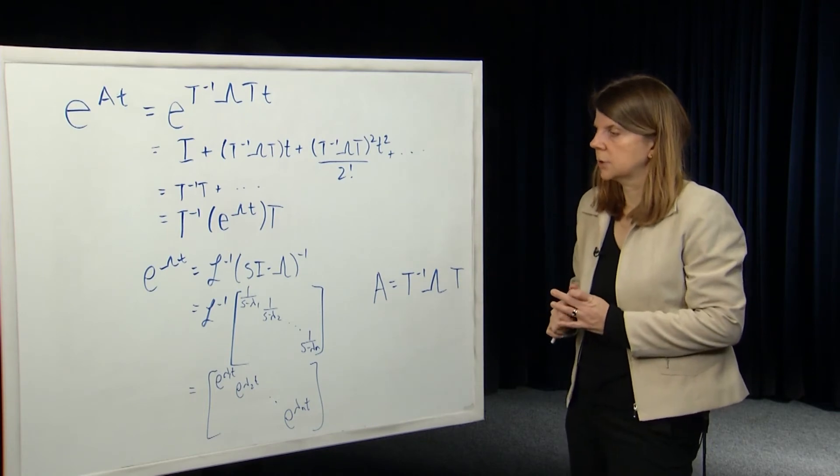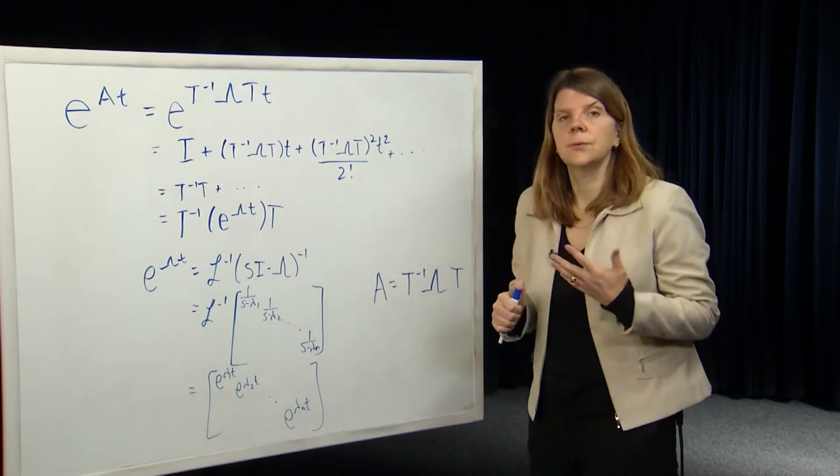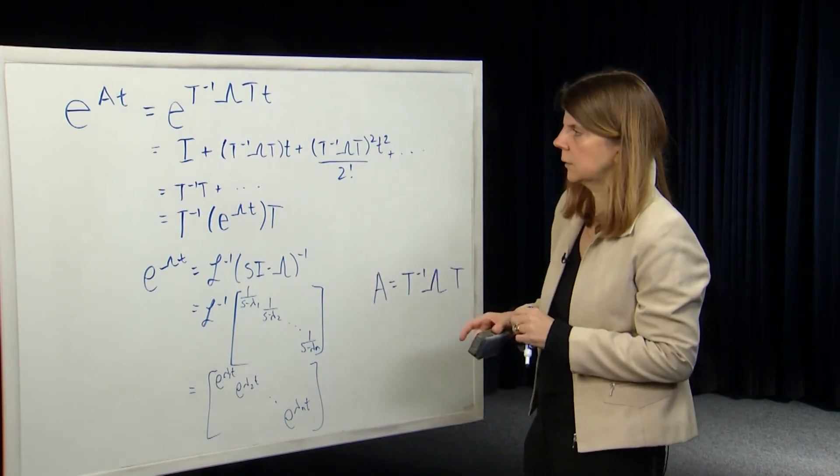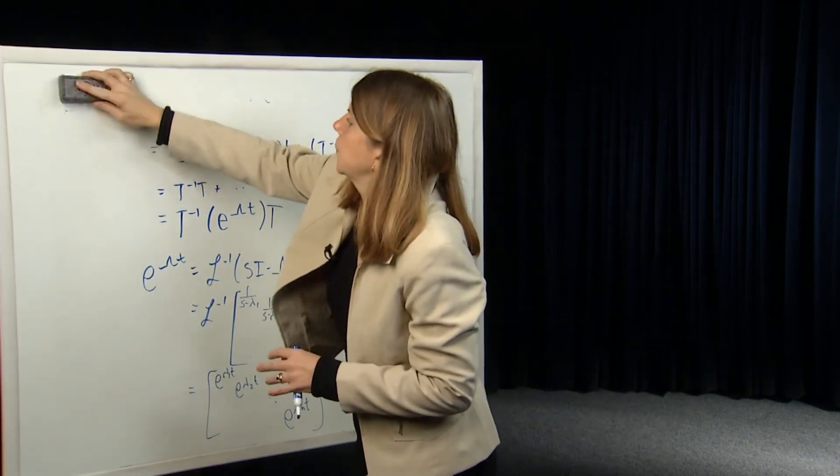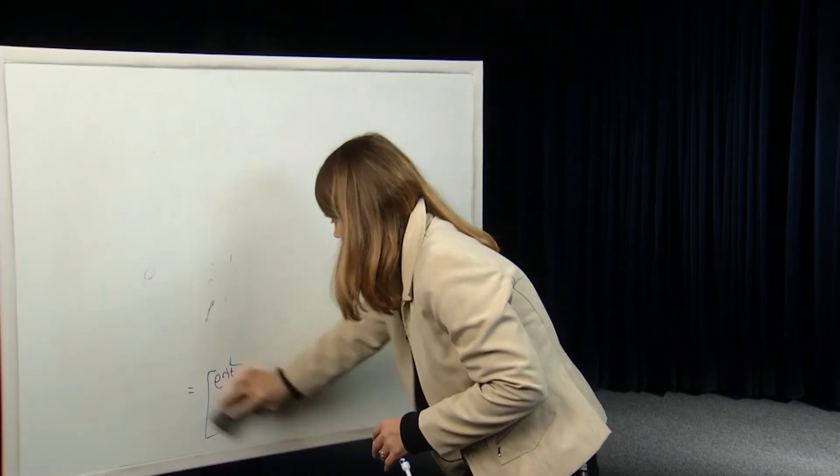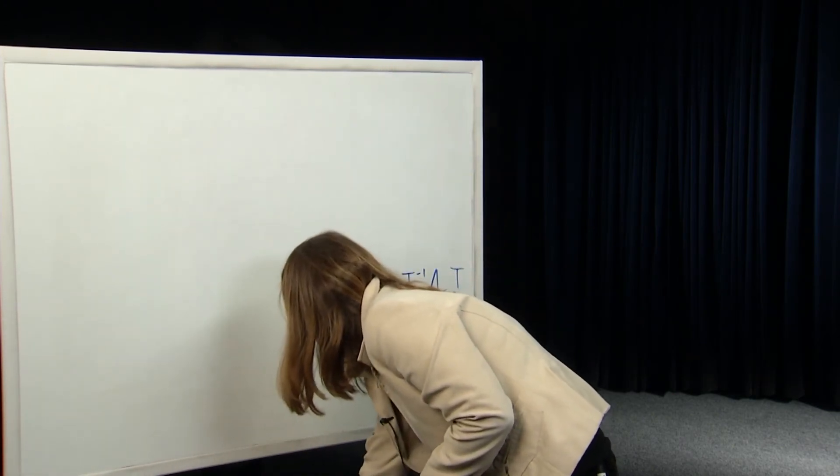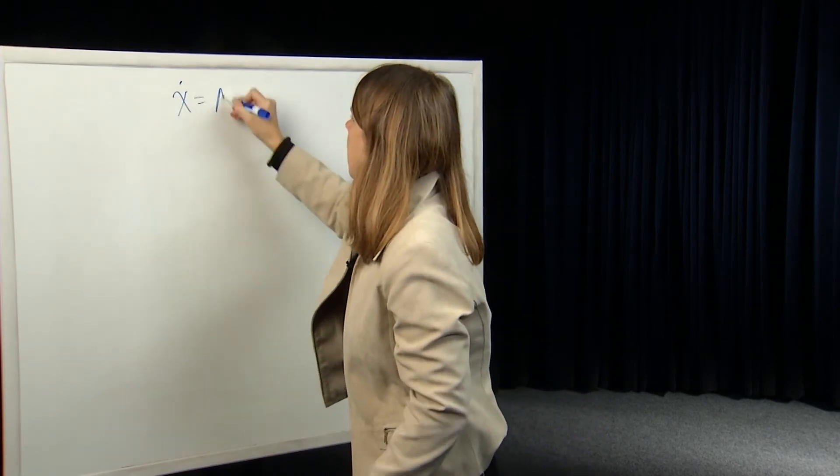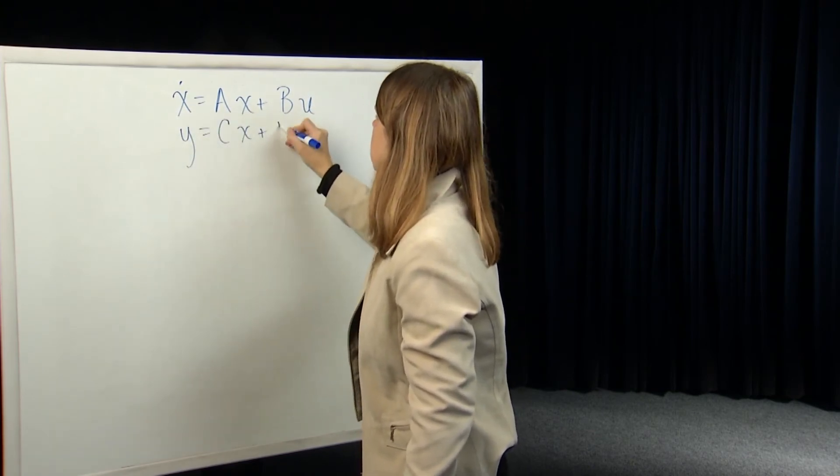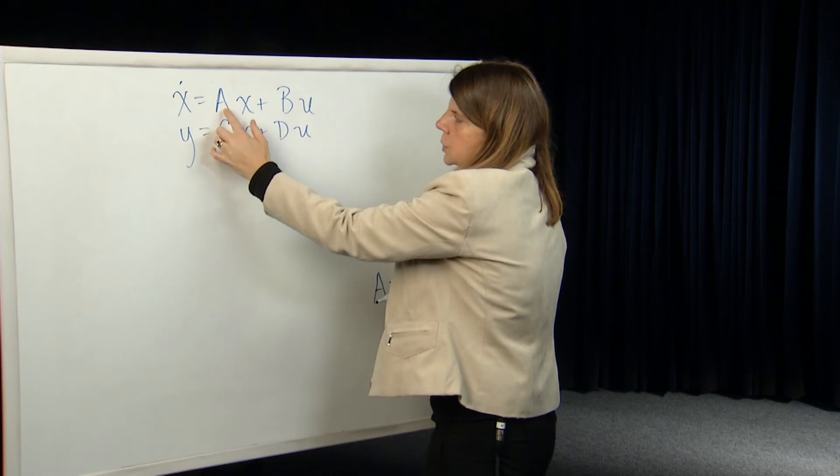So diagonalization provides an easy way to compute this matrix e to the At if the matrix A is diagonalizable. Let's end this by spending a few minutes talking about other things that this kind of similarity transform allows us to do. So, going back to the original system equations that we had. If we had the system x dot equals Ax plus Bu, y is equal to Cx plus Du, and now we look at this system which depends on the matrix A, so A is a general matrix. Suppose A is diagonalizable, so it can be written in this form.